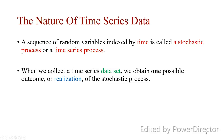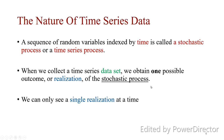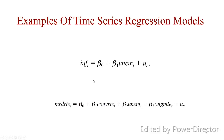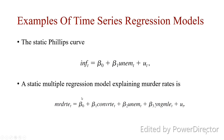The sequence of random variables indexed by time is called a stochastic process or time series process. When we collect a time series dataset we obtain one possible outcome or realization of a stochastic process. We can only see a single realization at a time. For example, there is a relationship between murder rate and unemployment — the more people are unemployed, the higher we expect the murder rate to be — and higher unemployment is thought to relate to lower inflation, which is what we know as the Phillips curve.